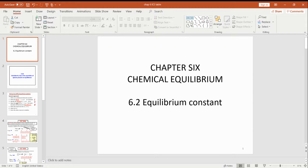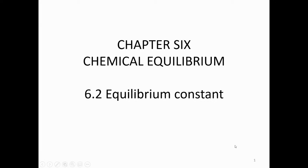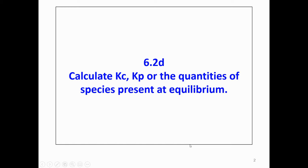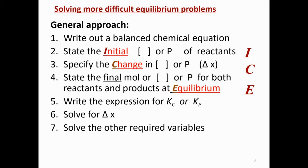Welcome to Chapter 6, Chemical Equilibrium. We shall continue with calculating Kc, Kp, or quantities of species present at equilibrium. For this part, we are going to solve more difficult equilibrium problems.